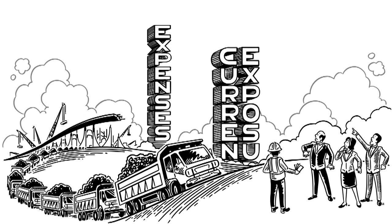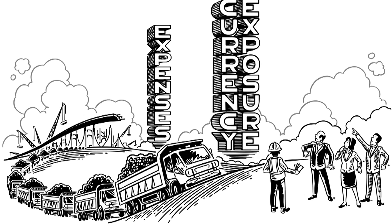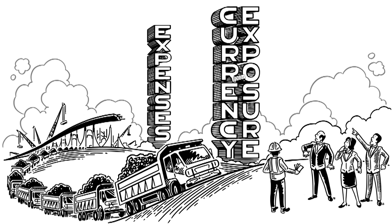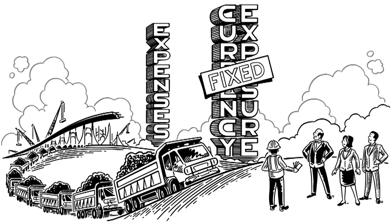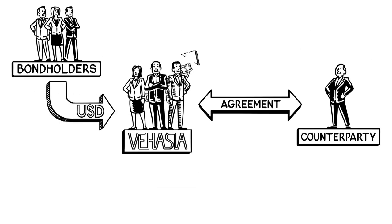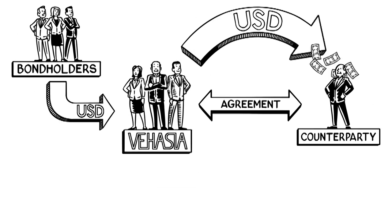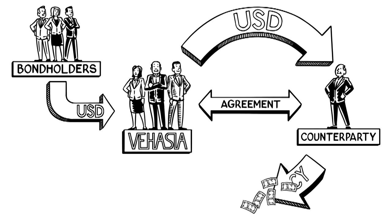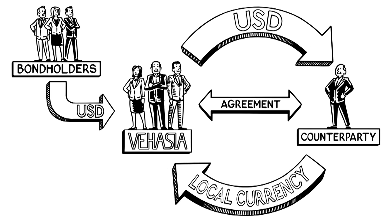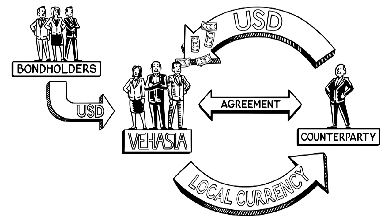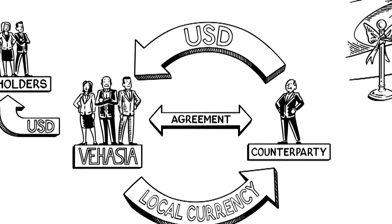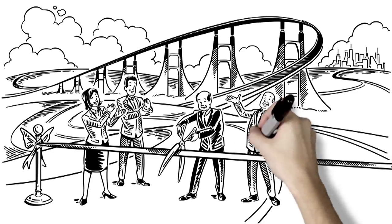So the company decides to enter into a cross-currency swap to hedge its risk. This enables Vahesia to exchange its US dollar borrowing for local currency at a set rate, and then later exchange local currency back to US dollars, which can be used to repay the debt.